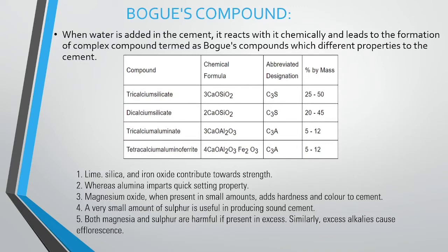Alumina imparts quick-setting property. Magnesium oxide, when present in small amounts, adds hardness and colour to cement. A very small amount of sulphate is useful in producing sound cement. Both magnesia and sulphur are harmful if present in excess. Similarly, excess alkalis cause efflorescence.